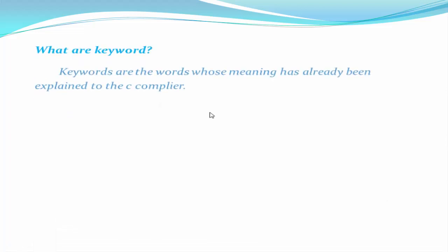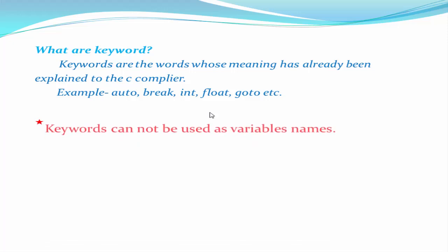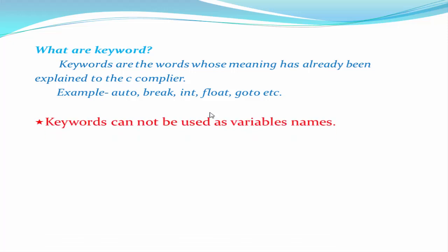Keywords are the words whose meaning has already been defined to the C compiler — for example, auto, break, int, float, goto. These are all keywords in C. One important thing to remember: keywords cannot be used as variable names. Now we see what the variable types are and the corresponding keywords associated with them.